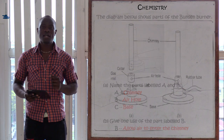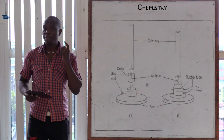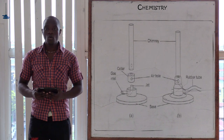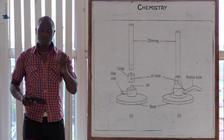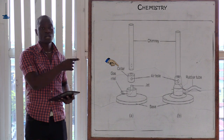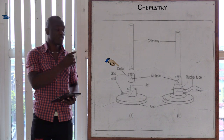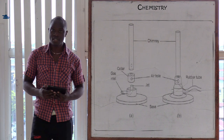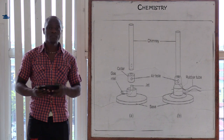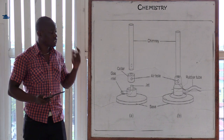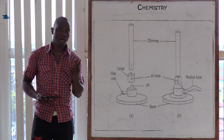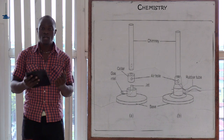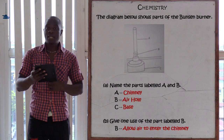In the Bunsen burner, you might be asked: what are the main parts? So the main parts are: we have always the chimney, the collar — so this region is the collar whereby we have the air hole — and then lastly we have the base. So those are the three main parts of the Bunsen burner: the chimney, the collar with the air hole inside it, and the base.